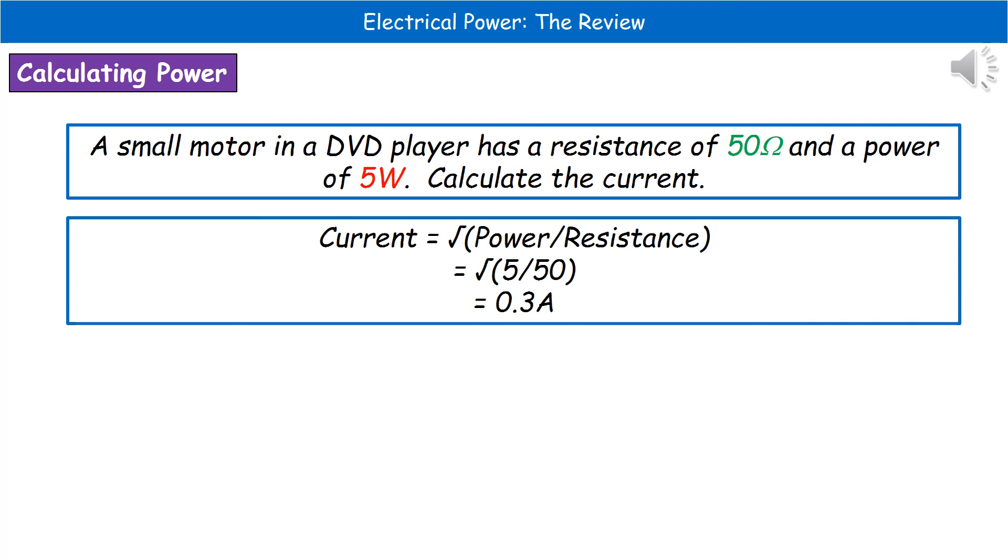The kind of question you could get: a small motor in a DVD player has a resistance of 50 ohms and a power of 5 watts. Calculate the current.